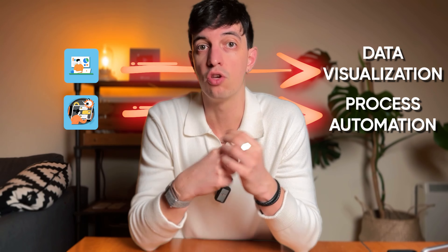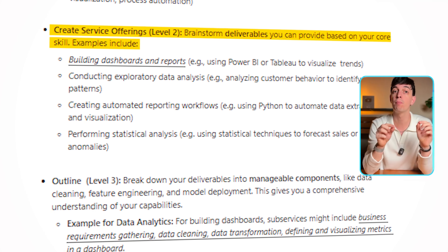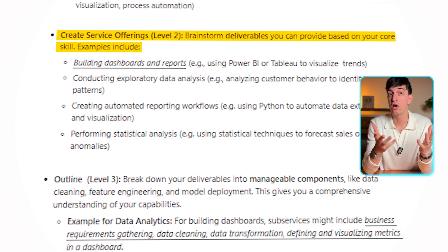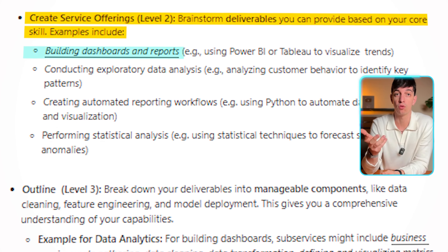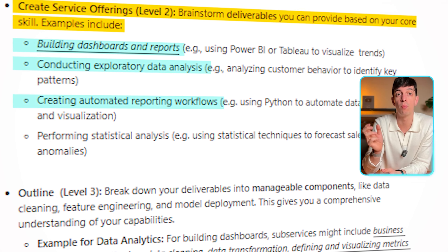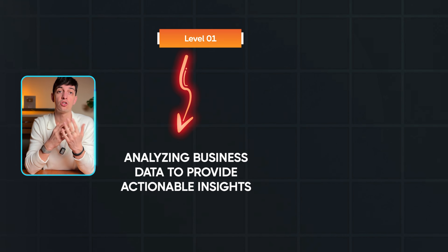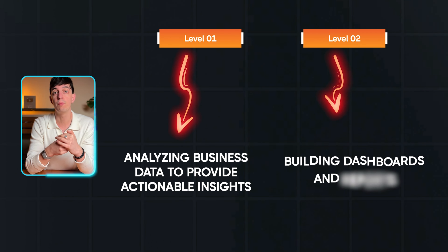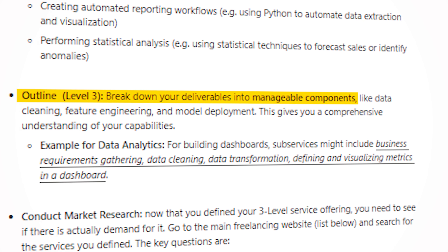Once level one is defined, we move to level two, which means brainstorming all the deliverables you can provide based on your core skill. You can think of building dashboards and reports using Power BI or Tableau, conducting exploratory data analysis, creating automated reporting workflows, or performing statistical analysis. To continue with our example, if our level one skill is analyzing business data to provide actionable insights, level two could be building dashboards and reports.